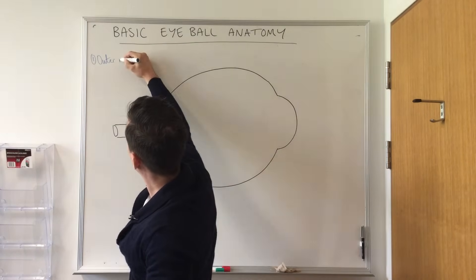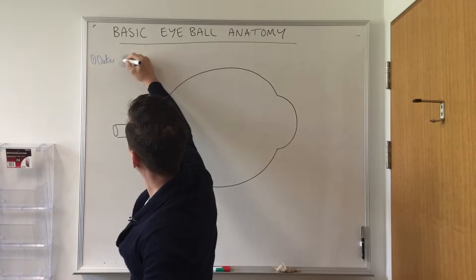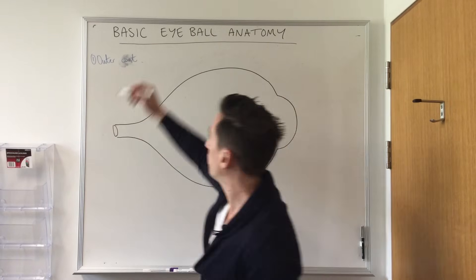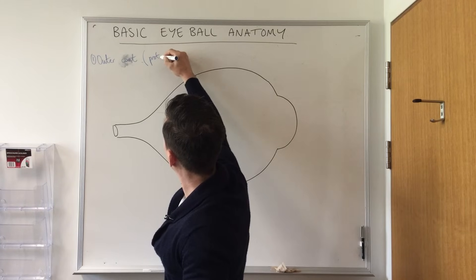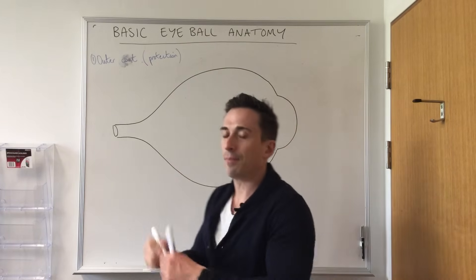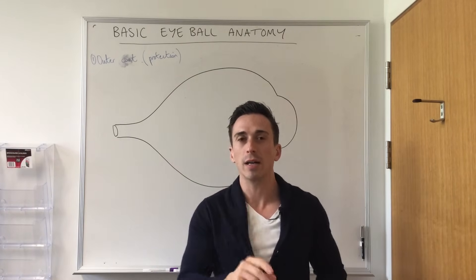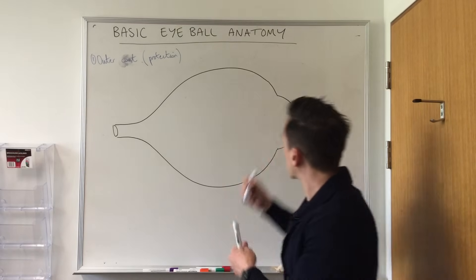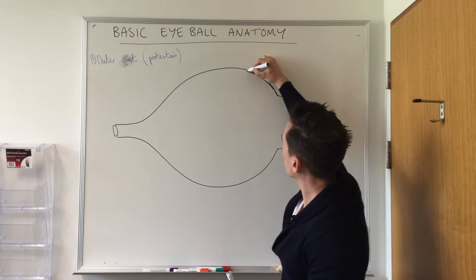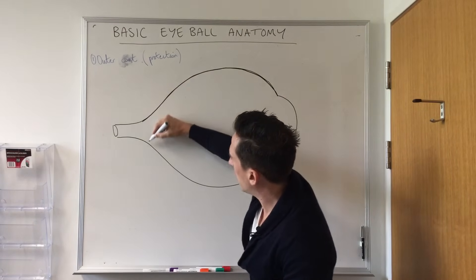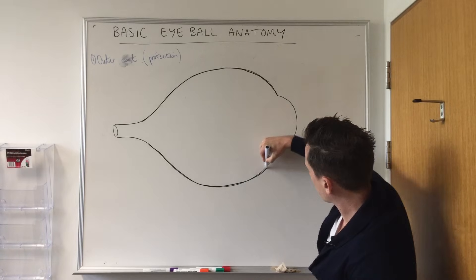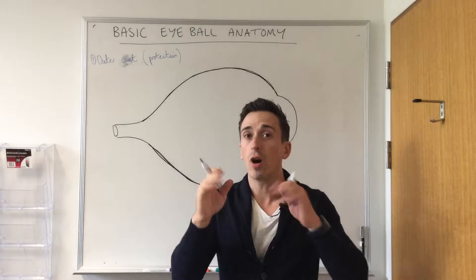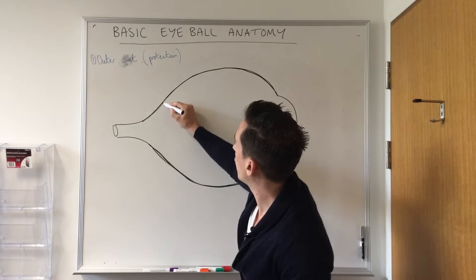Let's start with the outermost layer — the outer coat. The outer coat's function is for protection. It is made up of two particular parts: the first is called the sclera, and the second is called the cornea. If you look in the mirror, the white part of your eye is what we term the sclera.